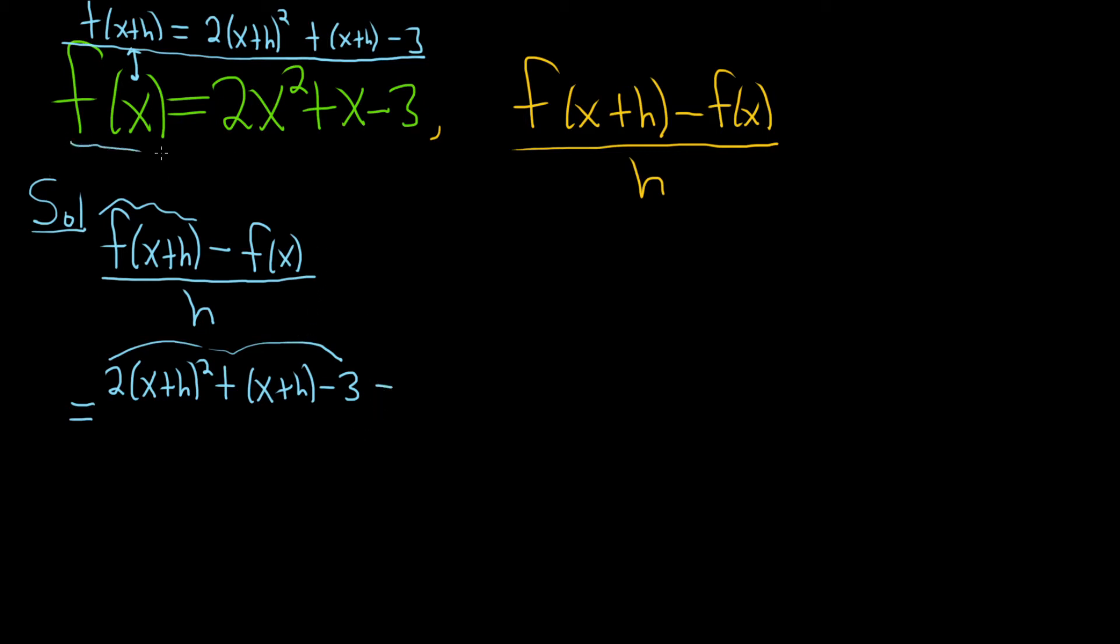Well, what's f of x? That's what's given in the problem. So parentheses, really important, because it's three terms: 2x squared plus x minus 3. Really, really careful problem. And it's all being divided by h.